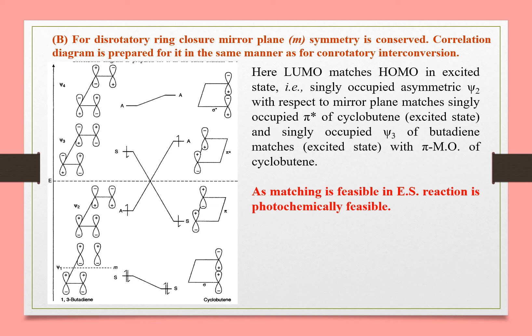In the case of sigma, it is symmetric with respect to the mirror plane; pi is also symmetric. Pi* is asymmetric and sigma* is asymmetric. Psi1 is correlated to sigma. Psi2, being asymmetric, is correlated with pi*. Psi3, being asymmetric, is correlated with pi. Psi4 is correlated with sigma*.